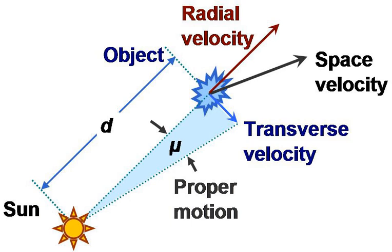and mu delta equals delta two minus delta one over delta t. The magnitude of the proper motion mu is given by the Pythagorean theorem, where delta is the declination.